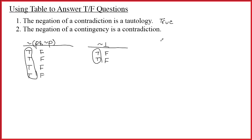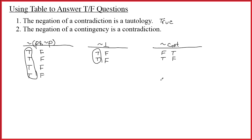Number two: the negation of a contingency is a contradiction. This one's also pretty easy, but let's draw a picture. A contingency is some combination of T's and F's — it can be true or false. If I negate a contingency, it becomes false and true — the opposite combination of T's and F's. Is there any way to start with a contingency, negate it, and end up with a contradiction? No. T's and F's are never going to turn into all F's by negation. So the picture shows this is false.